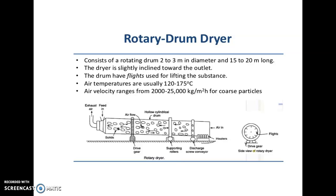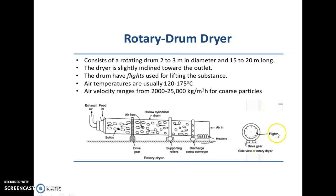The rotary drum dryer consists of a rotating drum having 2 to 3 meter diameter and 15 to 20 meter length. This dryer is slightly inclined towards the horizontal. The drum provided in this dryer is having flights — flights are nothing but metal plates which are used for lifting the substance. Generally drying is carried out at a temperature of 120 to 175 degrees Celsius, and the air velocity is maintained at 2000 to 25000 kg per meter square hour.